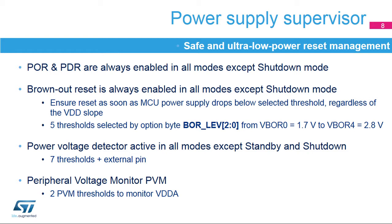Four thresholds from 1.7 to 2.8 volt can be selected by option byte programmed in flash memory. A power voltage detector (PVD) can generate an interrupt when VDD crosses the selected threshold. The PVD can be enabled in all modes except standby and shutdown modes. The threshold is selected by software among seven possible values. In addition, comparisons can be done between VREF INT and the PVD IN external pin. The VDD-A power supply can be independent from VDD and can be monitored with peripheral voltage monitoring (PVM).